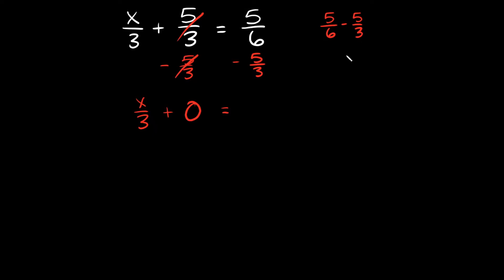So how do you subtract these fractions? The main thing is they have to have the same denominator. One way to do that: how can you turn 3 into 6? You can multiply by 2, because 3 times 2 is equal to 6. But if you're going to multiply by 2 on the bottom, you also have to multiply by 2 on the top. So 5 over 3, multiplied by 2 on the bottom and top, turns into 10 over 6.